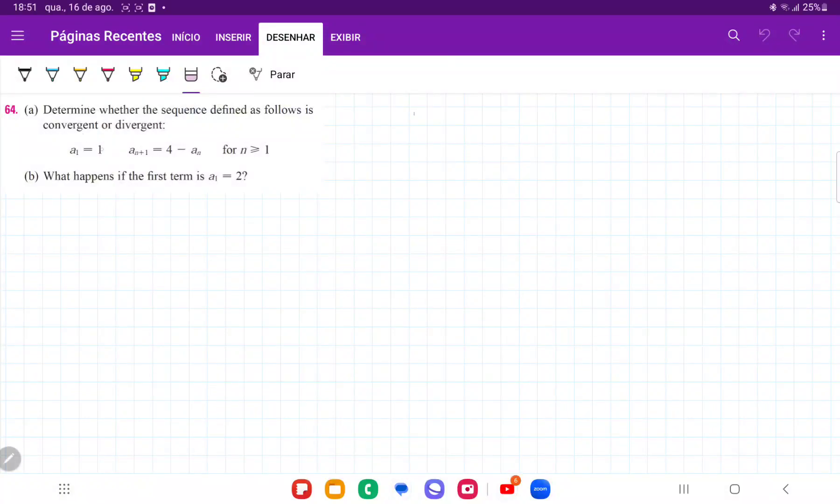For number 64, we want to determine whether the sequence defined as follows is convergent or divergent. They give us a recursive formula where the first term a1 is equal to 1.